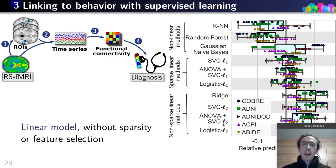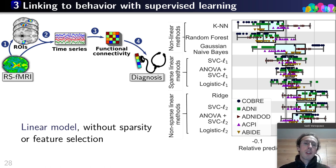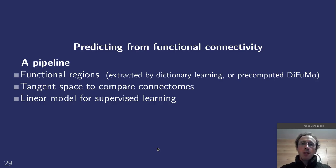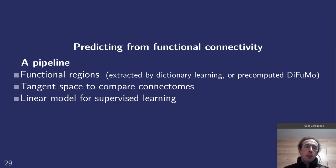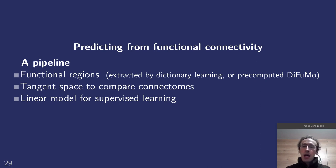In the last step, using supervised learning, we experimented with a variety of models. What comes out is that linear models without sparsity or feature selection are those that work best. To wrap up, there is a canonical pipeline emerging: first, extract signal on functional regions such as those extracted by dictionary learning, ICA, or pre-computed DiFuMo maps; then use the tangent space to compare connectomes; and finally use a linear model for supervised learning.